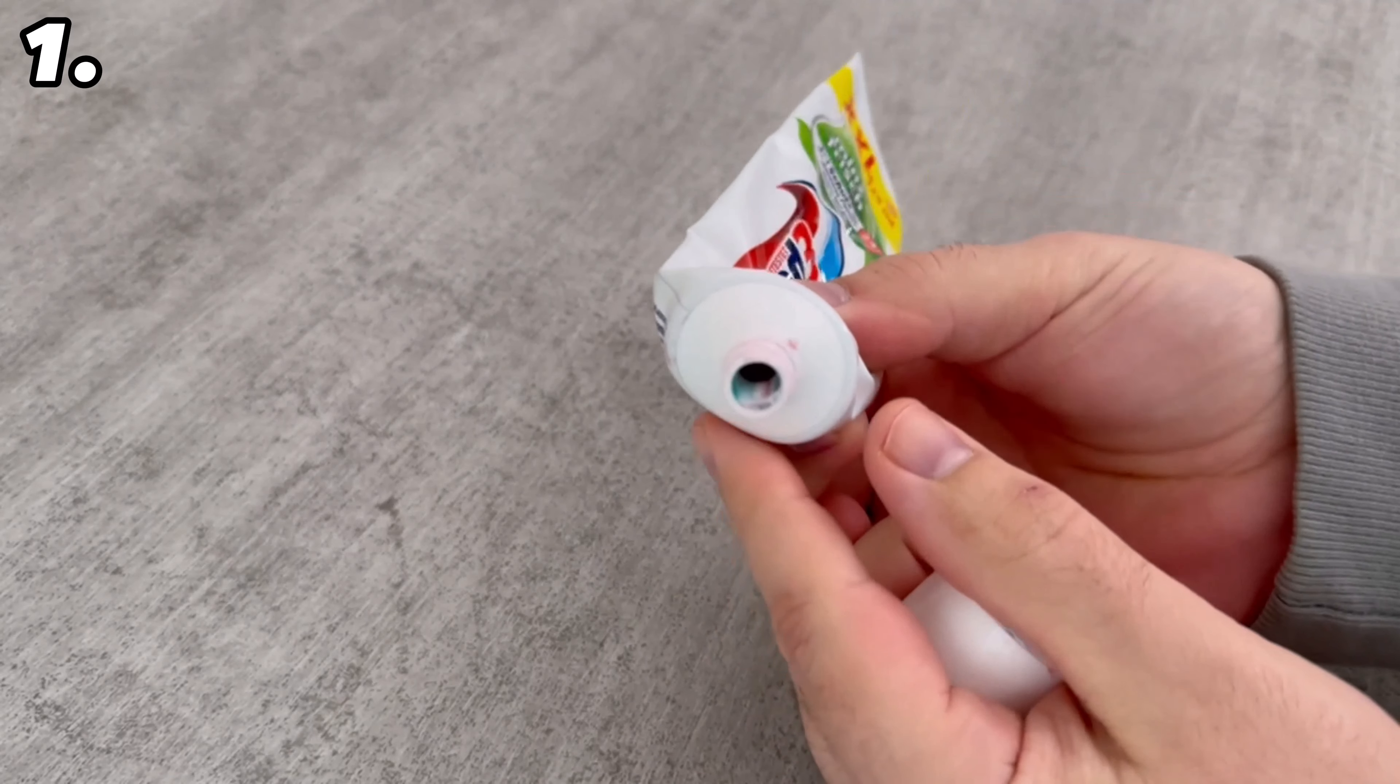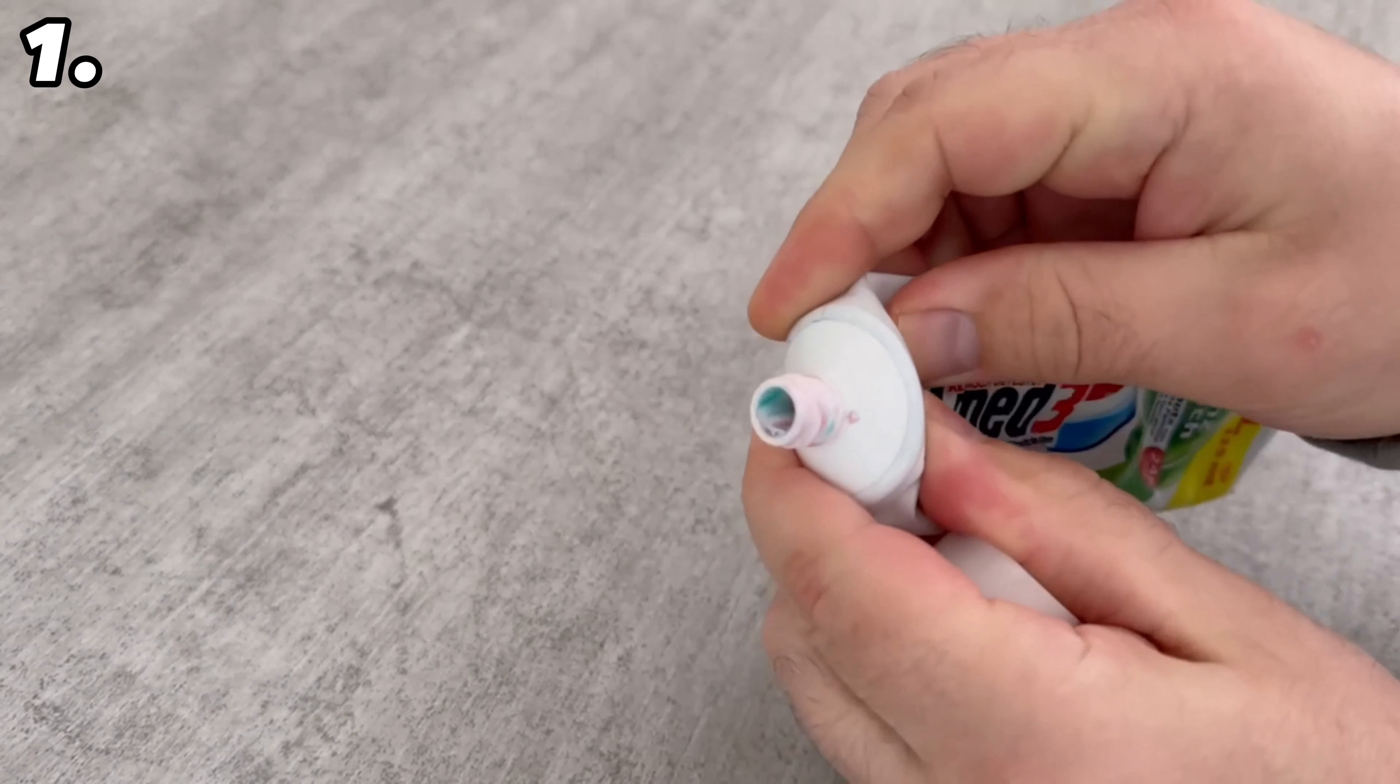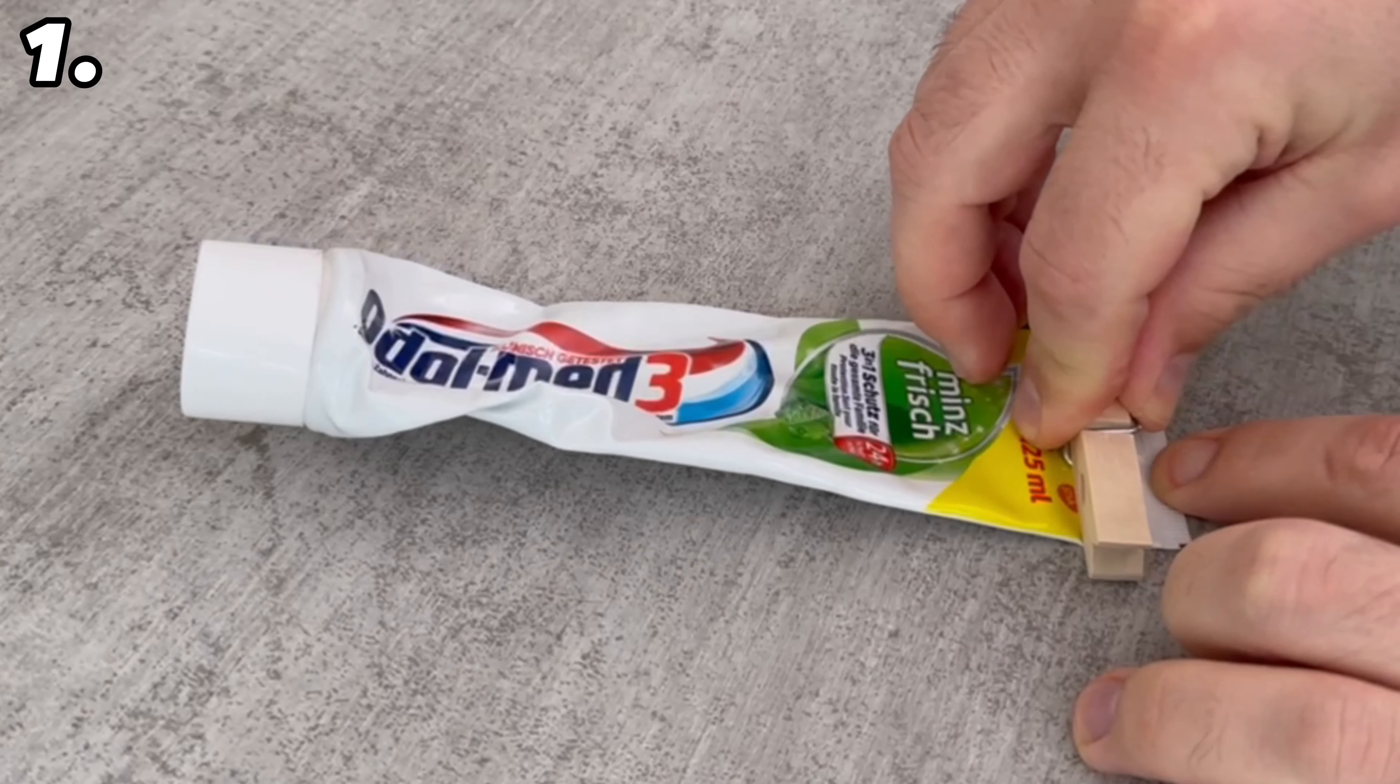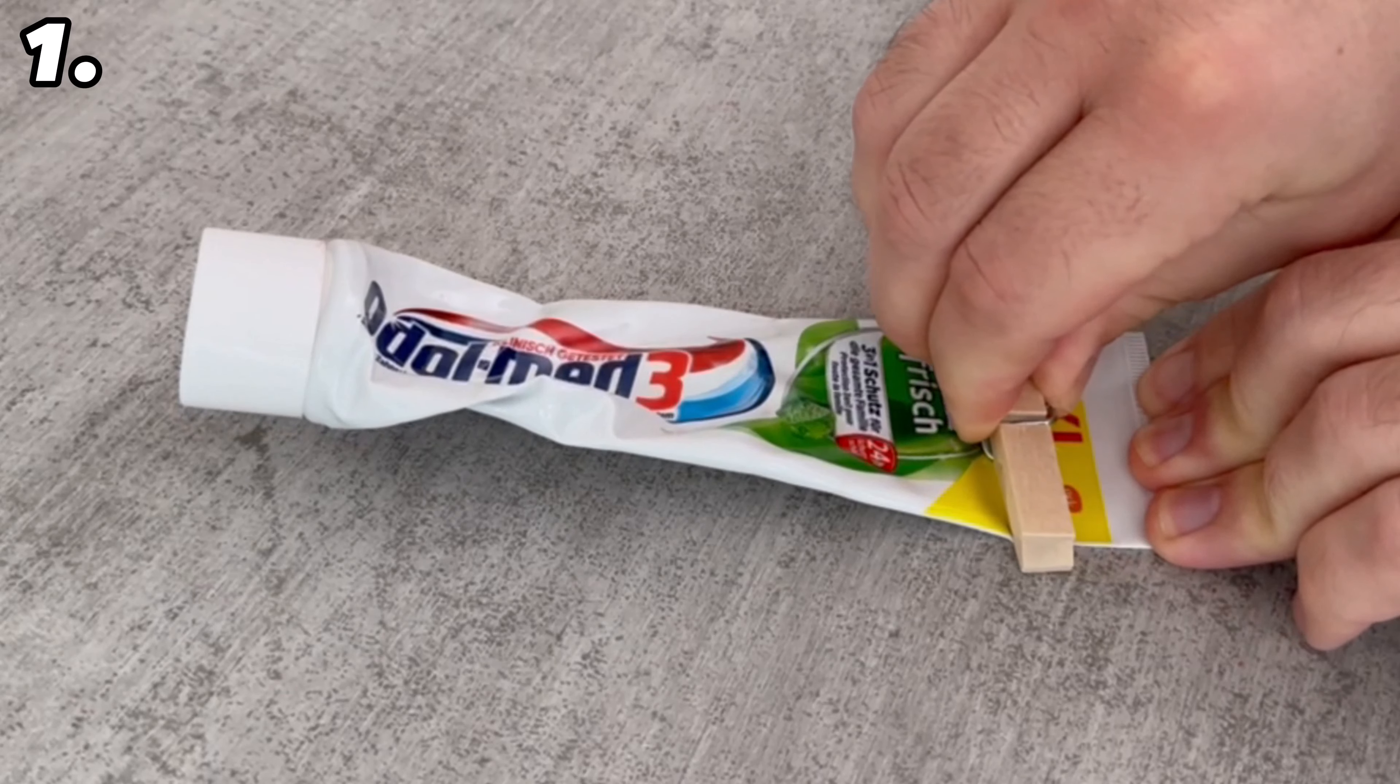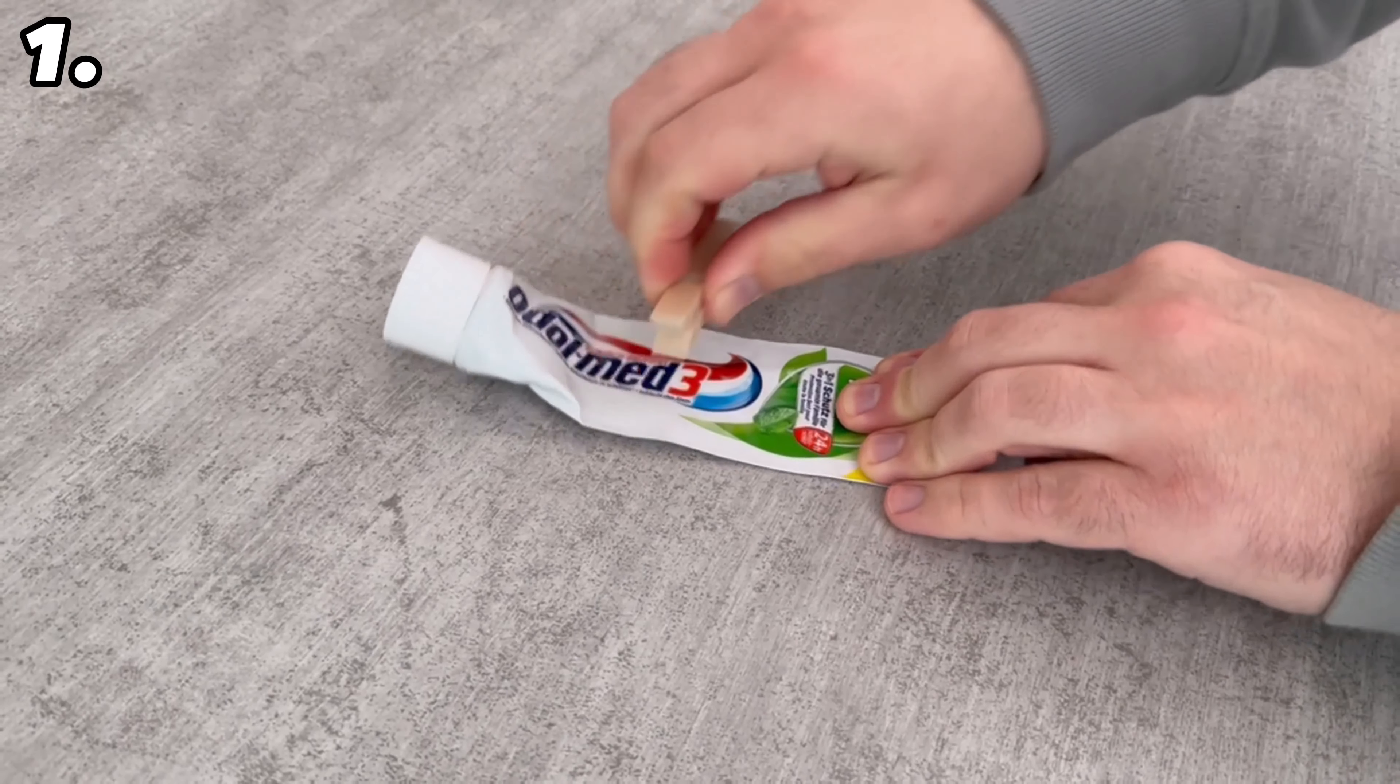If you have an empty toothpaste or cream packet, you can use a clothespin to make sure you get every last bit out. Place the tube somewhere, grab a clothespin, and start at the back end by pressing the clothespin firmly onto the tube and wiping everything forwards.